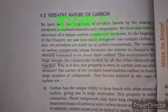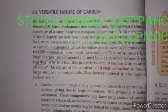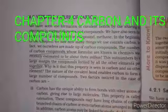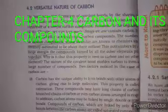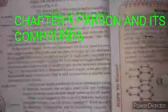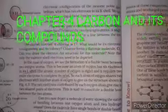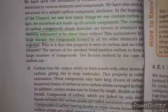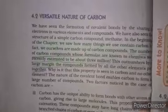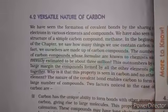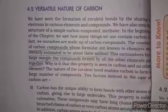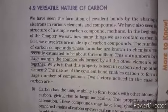Good morning students. We already started Chapter 4: Carbon and Its Compounds. We already discussed up to page 61 — allotropes of carbon and also about covalent bonds. Today we discuss the next topic. Open your books on page 62: Versatile Nature of Carbon. Versatile means the different, anomalous behavior of carbon.